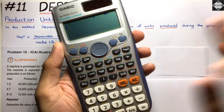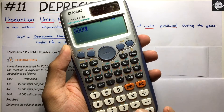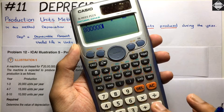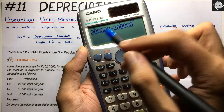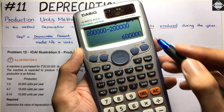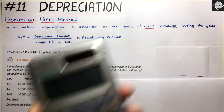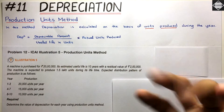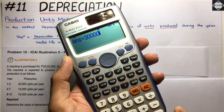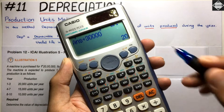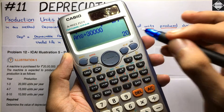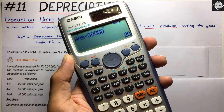Let's take a simple example. Say a machine costs ₹8 lakhs and the scrap value is ₹2 lakhs. So cost minus scrap value gives us ₹6 lakhs as the depreciable amount. Divide ₹6 lakhs by the useful life of 30,000 units, and you get ₹20 — that is the depreciation per unit the machine produces.